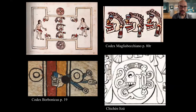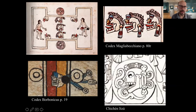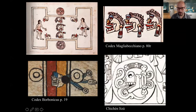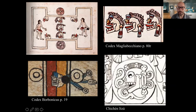So to recap: the Codex Borbonicus shows water spurting out of the side of the skull at the center line of the court; the Codex Magliabechiano shows three skulls with that ruff of hair marking the center line; and the lower right at Chichen Itza shows a very similar skull in what is probably a center-line marker. And that's where we'll leave it off and turn over to questions.